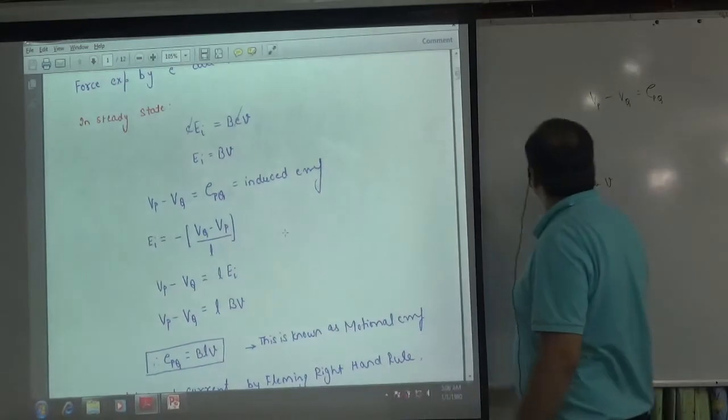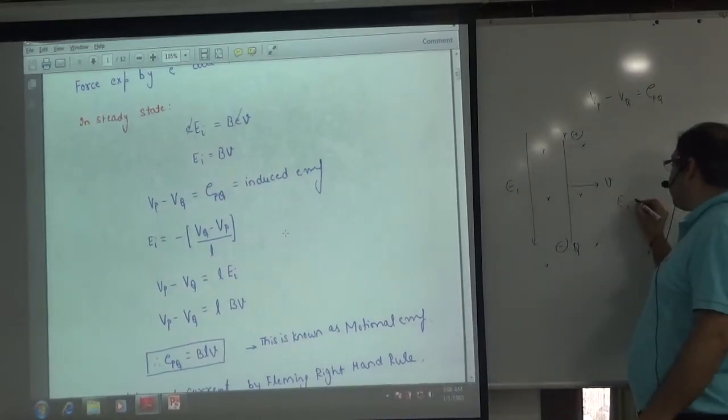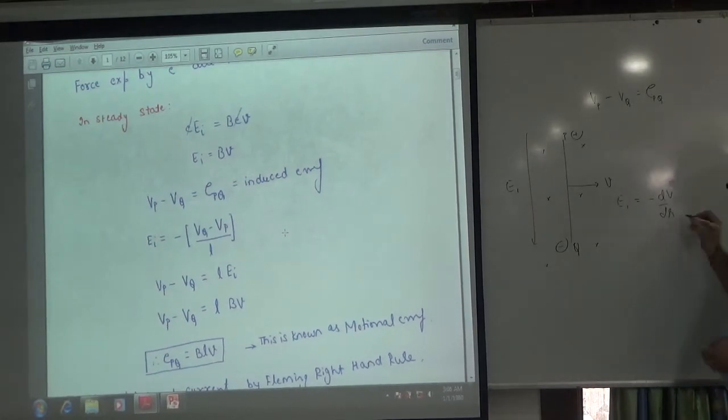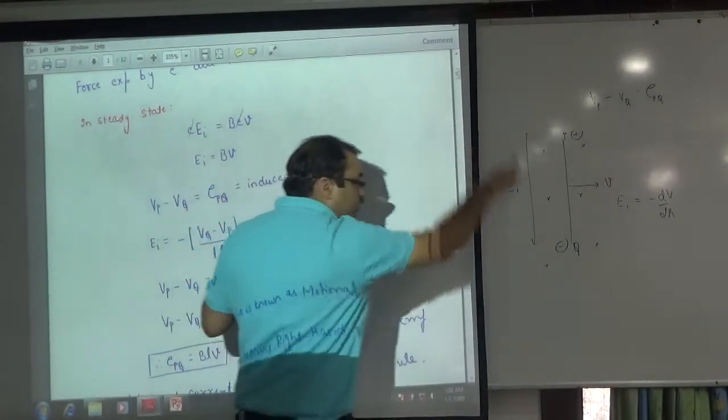Where was the electric field developed? Positive to negative electric field. And we have done in electrostatics: E is dV by dR. So electric field is coming down.